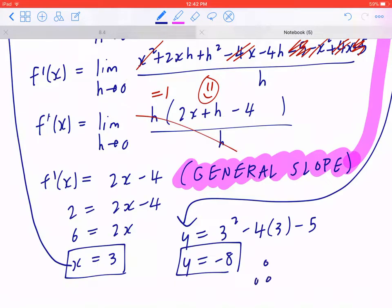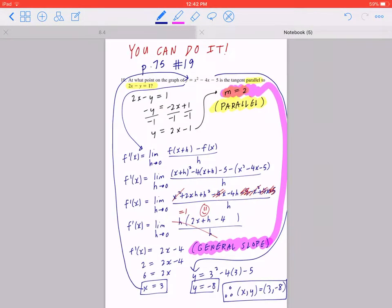Therefore, the point x, y is going to be 3, negative 8. I hope this makes sense.